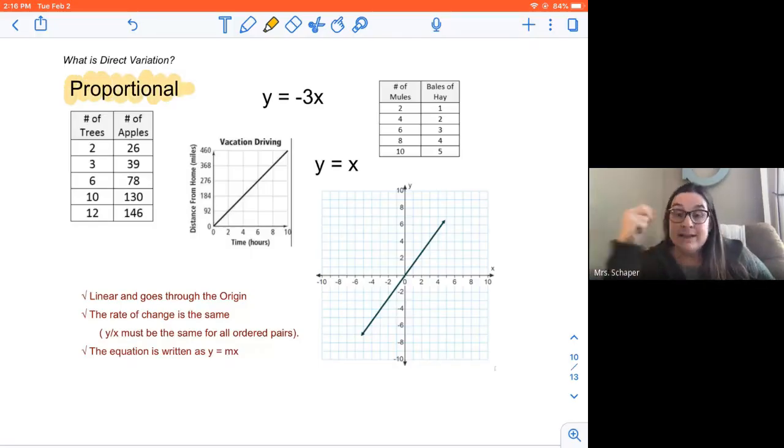These are all examples of functions that are proportional. We have a couple graphs, some t-tables, some algebraic ones, so let's take a look. In order for a graph to be proportional, it needs to go through the origin, and the origin is where 0, 0 meets. So if a graph goes through the origin and it's linear, so straight line, it's going to be proportional. That's how you tell if a graph is proportional.